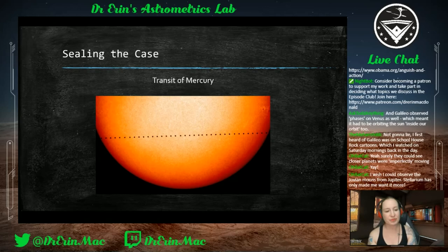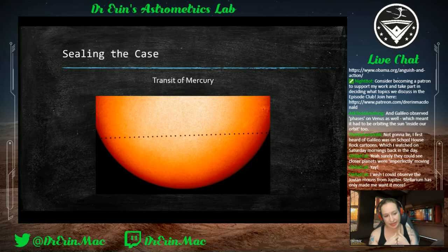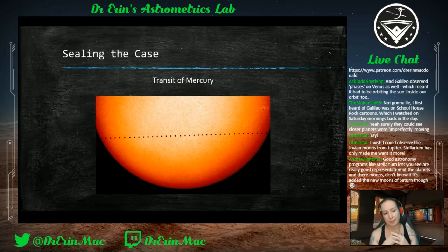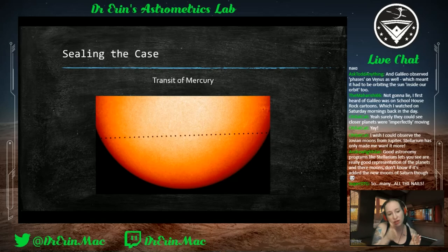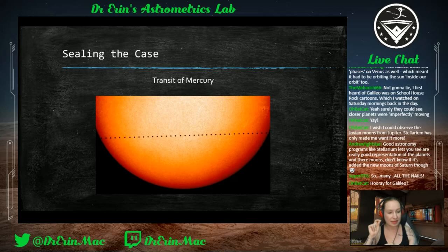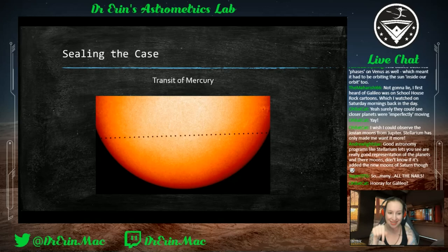Galileo also observed a transit of Mercury — Mercury passing in front of the sun and moving through it — which confirmed Mercury orbits the sun. Critically, the transit of Mercury appeared exactly where Kepler's laws predicted it would be. Kepler's laws, applied to Tycho Brahe's data, predicted the motion precisely — and the observation matched perfectly, wrapping it all together.